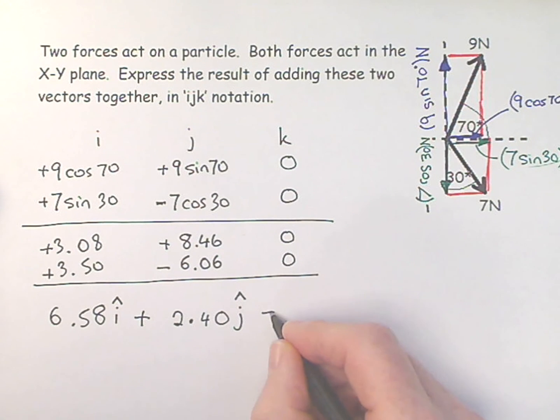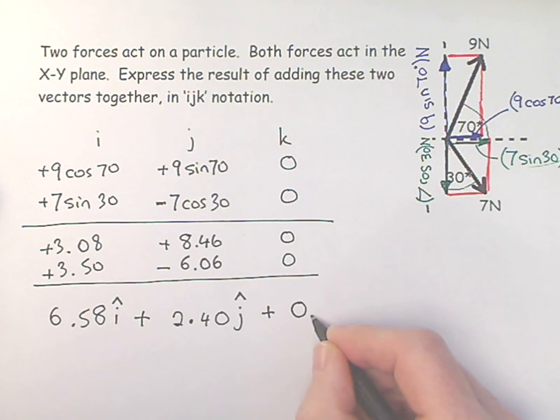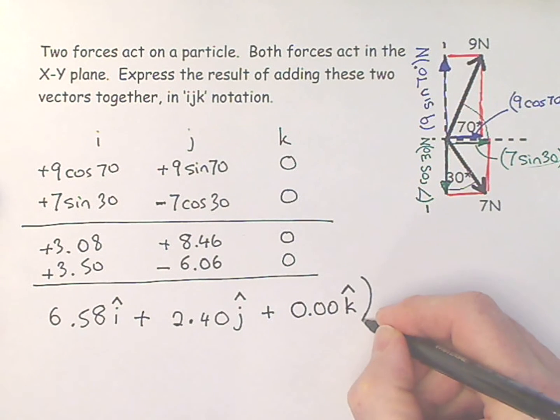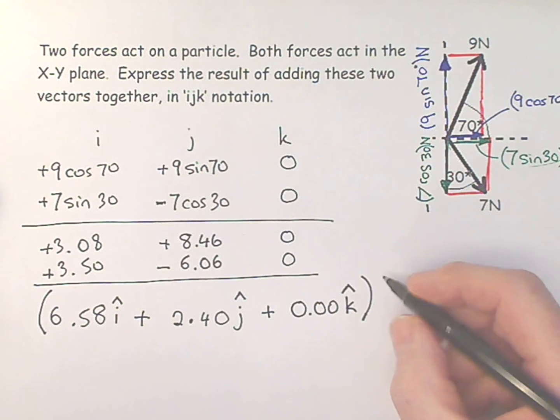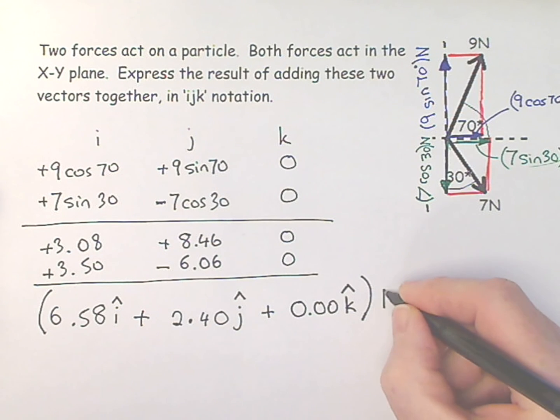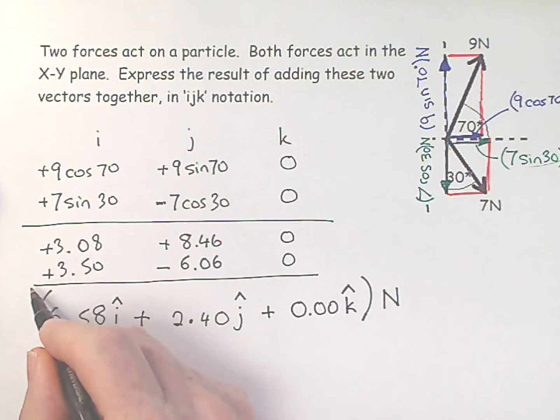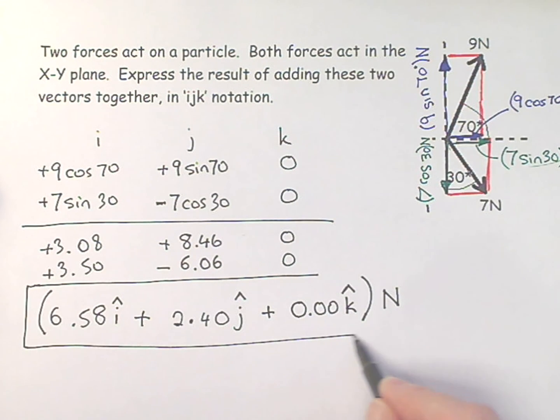And then I don't like to ignore the k, just because it's not mentioned. I like to put it in. And then the final thing which I absolutely must not forget is that this is of course a vector pattern which is in terms of newtons. So I put down newtons, and then the final thing I do is I put a box around my answer.